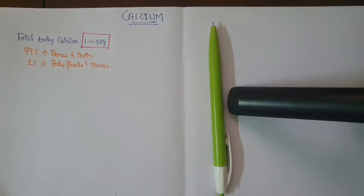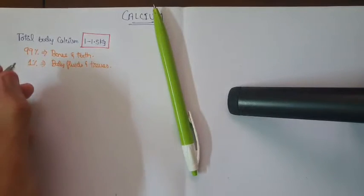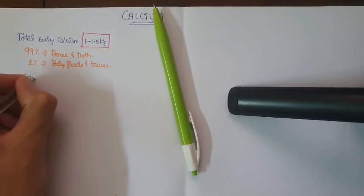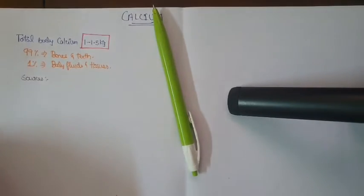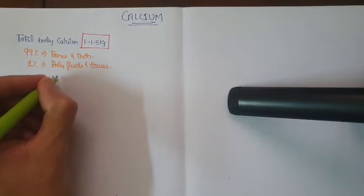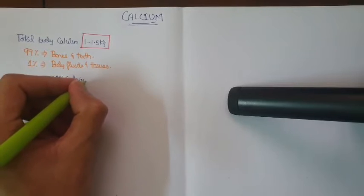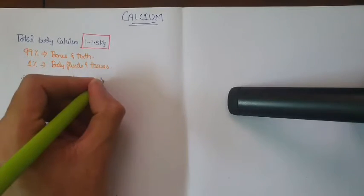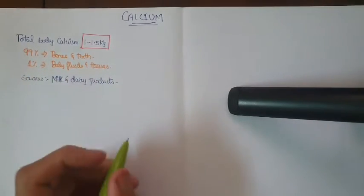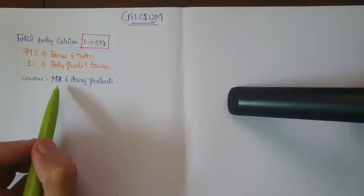Moving on with the sources of calcium: mainly the milk and dairy products. Apart from that, you can also add egg yolk, fish, and beans.